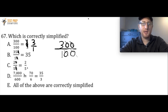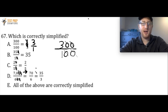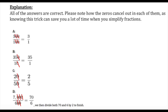For D, we don't have the same number of zeros, but we can cancel some. The denominator has two zeros, so I cancel two zeros from the top number as well — giving me 70 over 6. If I divide both top and bottom by 2, I get 35 over 3. So E is the right answer — all of these are correctly simplified. Here's the written solution; pause the video and take all the time you need.